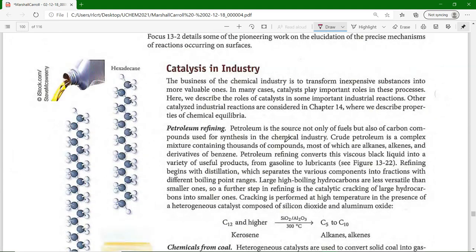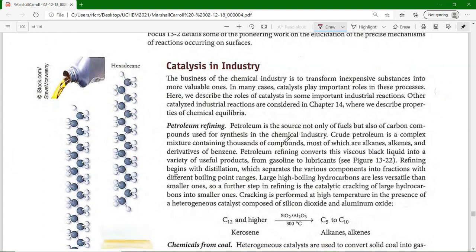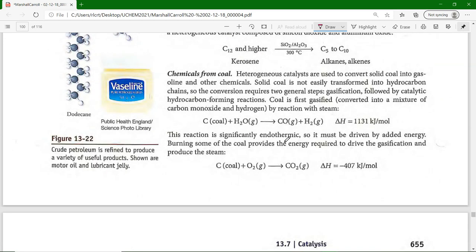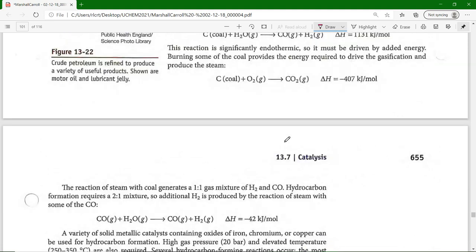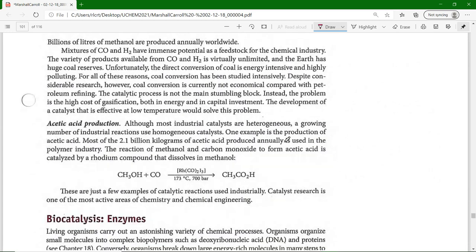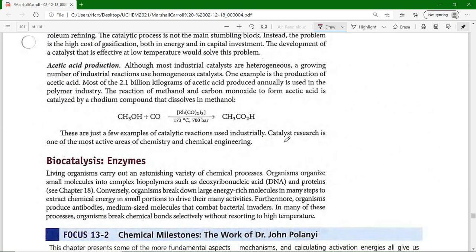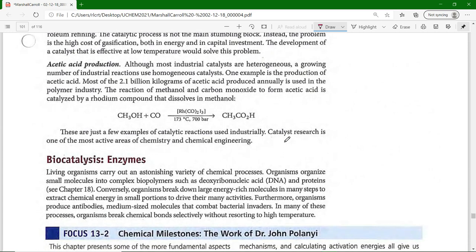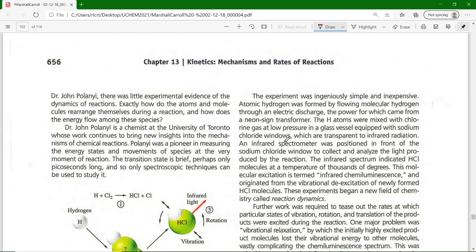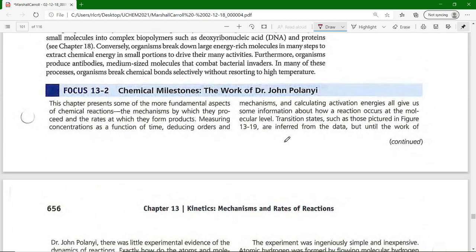Catalysts are used, just for your own knowledge, in refining petroleum products, which is pretty darn important. Chemicals from coal use heterogeneous catalysis. And back to some industrial ideas for what catalysts are used for. Biocatalysts, enzymes are examples of biocatalysts. We won't have to go into details about enzymes, which are biological catalysts.